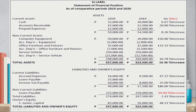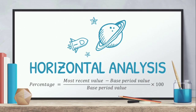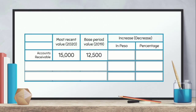For example, we have a statement of financial position for 2019 and another for 2020 — so two periods. Using the formula — most recent value minus base period value, divided by base period value, times 100 — for accounts receivable: the 2020 value is 15,000 minus the 2019 base period value of 12,500, giving a difference of 2,500. Divided by the base period value of 12,500 and multiplied by 100, we get a 20% increase.